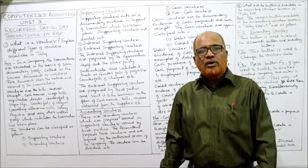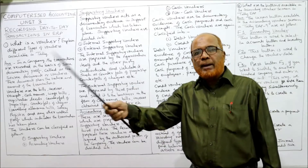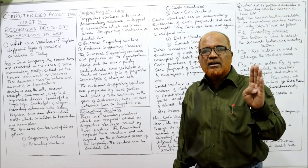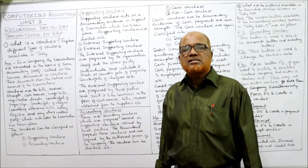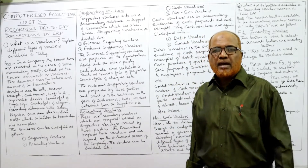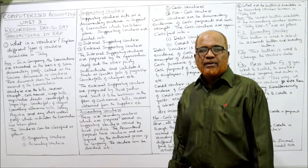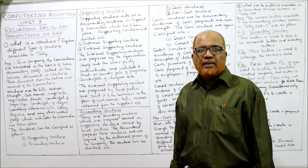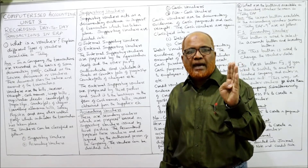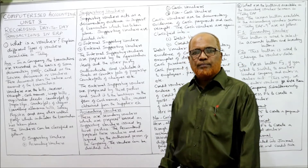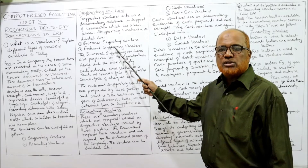Receipts given by outsiders are also external supporting vouchers. When we make a payment to an outsider, they give us a receipt. For example, when we pay the telephone bill, electricity bill, or water bill, we receive an external supporting voucher from the party we paid.